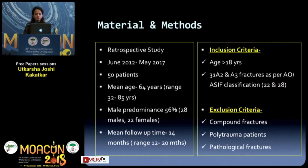We conducted a retrospective study of 50 patients with a mean age of 64 years, with 56% male predominance and a mean follow-up of 14 months. We included patients older than 18 years with type 31 A2 and A3 fractures as per the AO classification, which were 22 and 28 respectively. We excluded compound fractures, patients with polytrauma, and those with pathological fractures.